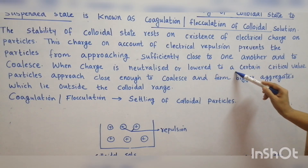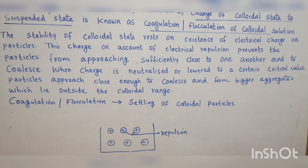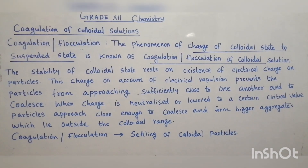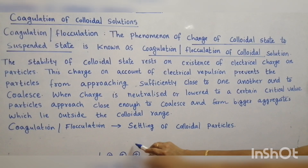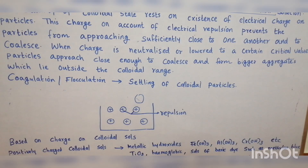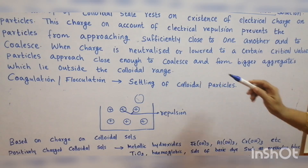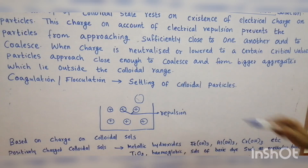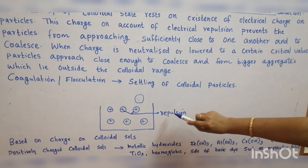When charge is neutralized or lowered to a critical value — for example, if a negatively charged particle gets inside the colloidal particle — there is neutralization or lowering of the charge possessed by the colloidal particle. When the charge gets neutralized, the colloidal particle approaches close enough to collapse and form bigger aggregates, which lie outside the colloidal range. This is represented in the figure.